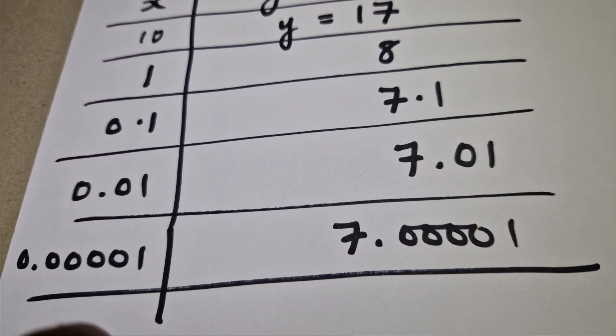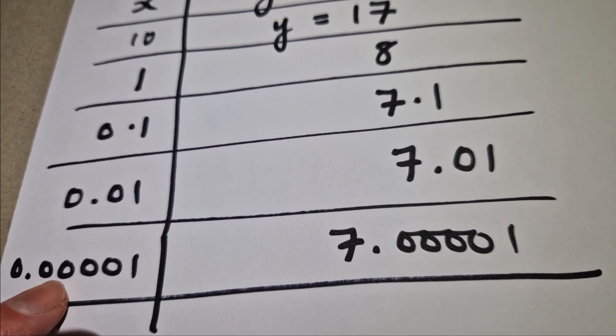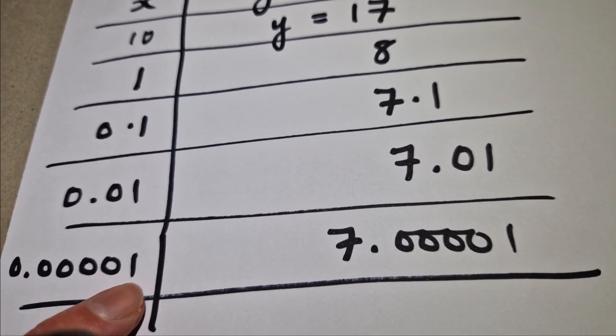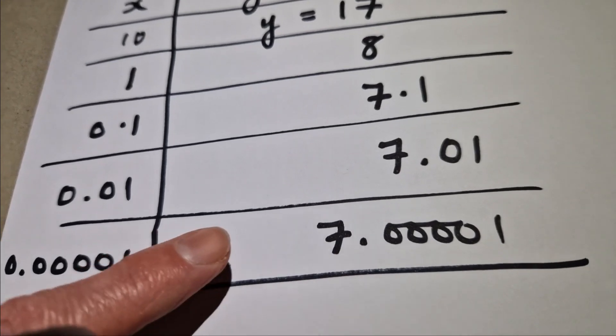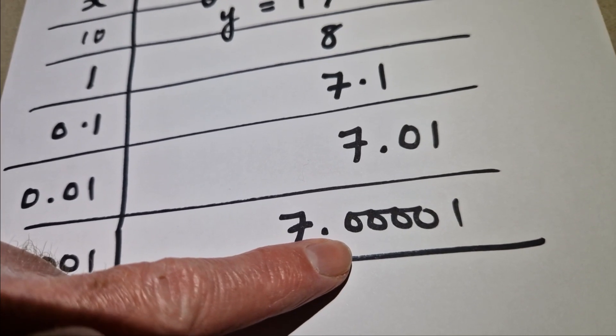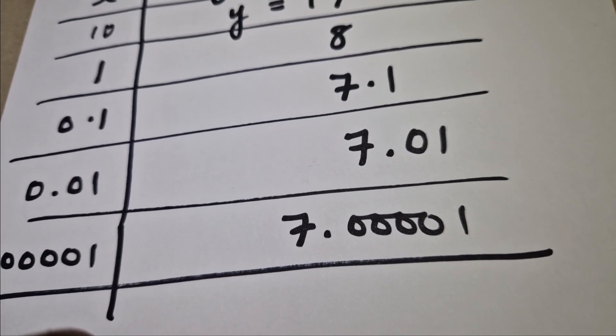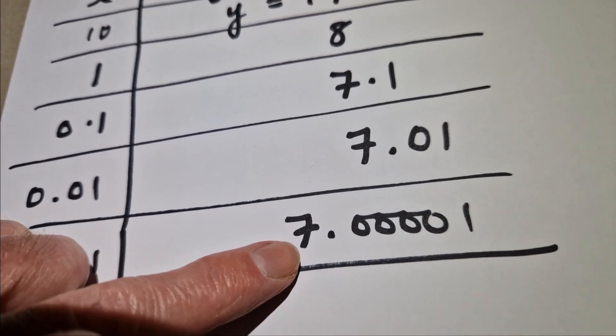So you could imagine if I chose an x value here of zero point and then did a hundred zeros and then put a one on the end, my value of y would be seven point and then a hundred zeros and then one. And by that stage, the one on the end is so tiny, the number is basically equal to seven.